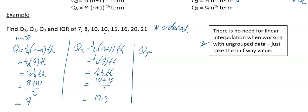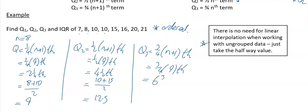Q3 is three quarters of the way through the distribution: (3/4) × (n+1) = (3/4) × 9 = 6.75, the 6.75th value. It's good enough to find halfway between the 6th and 7th values. The 6th value is 16 and the 7th value is 20, so Q3 = (16 + 20) ÷ 2 = 18.